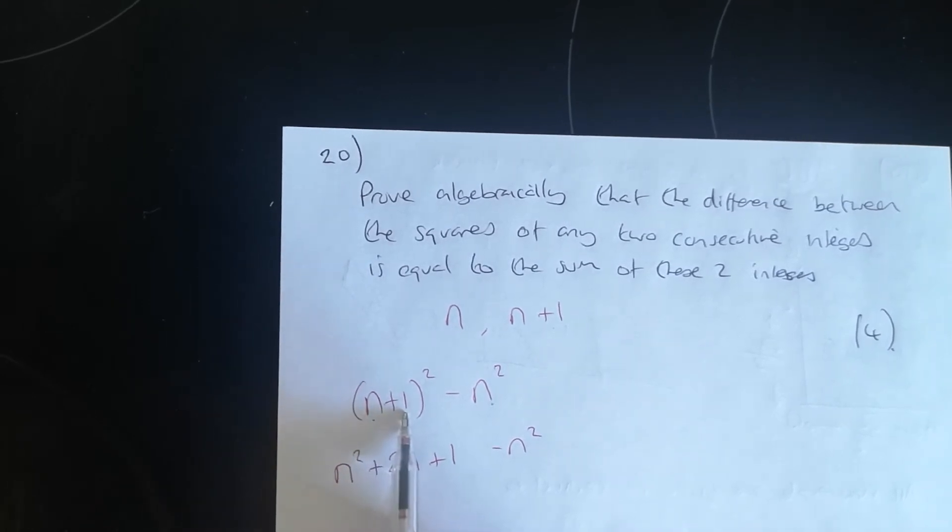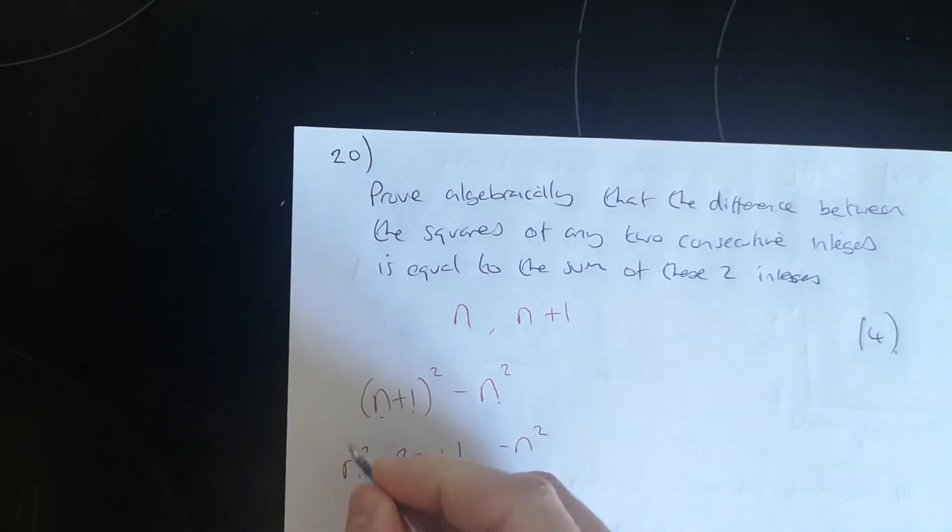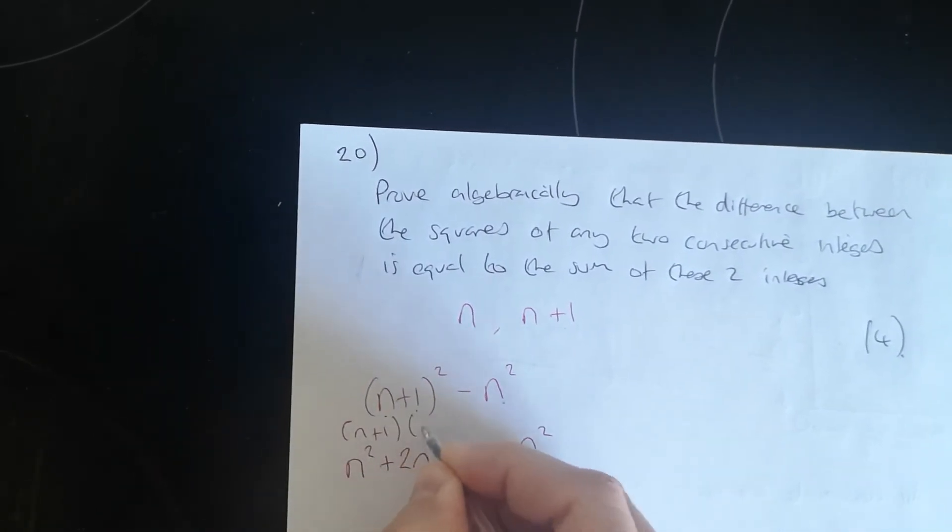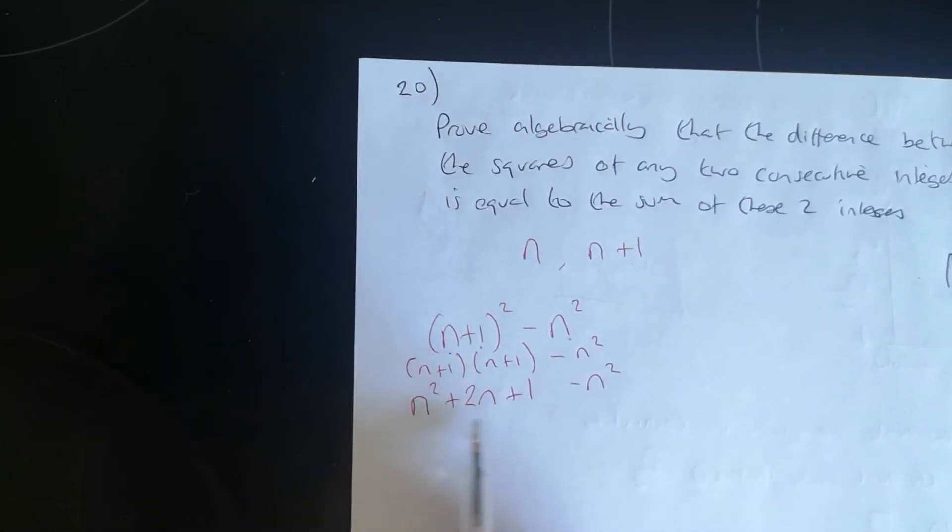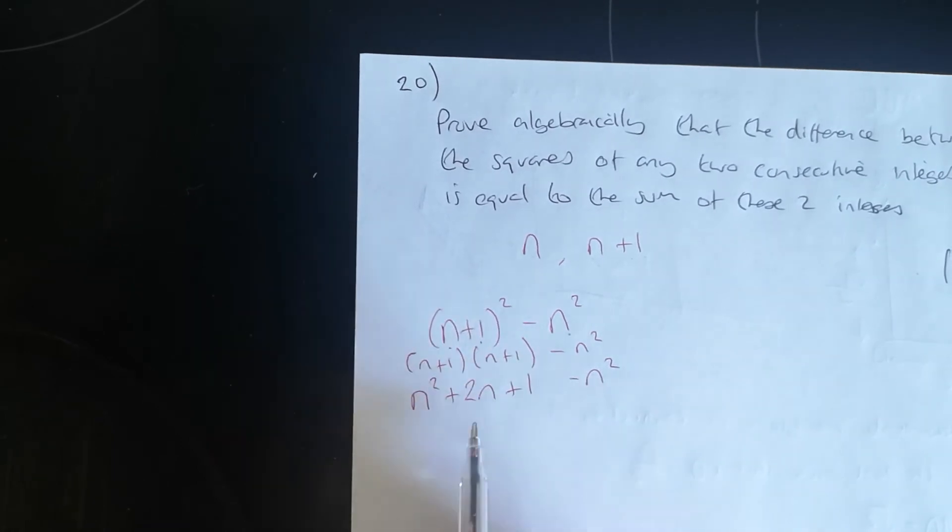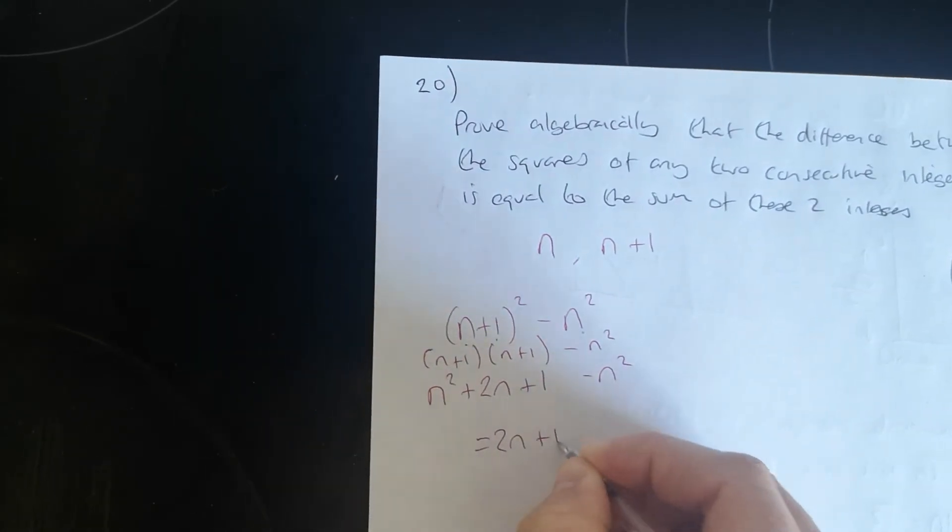Remember when you expand this, it's two sets of brackets. It could be written like that, and there's four calculations. And then if we simplify that, n squared minus n squared is eliminated, so you end up with 2n plus 1.